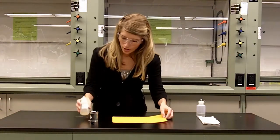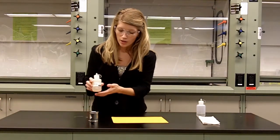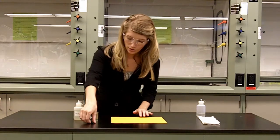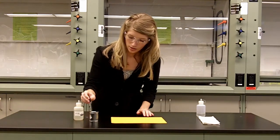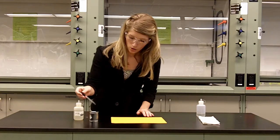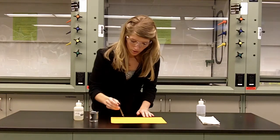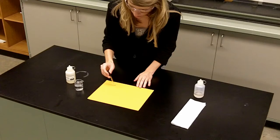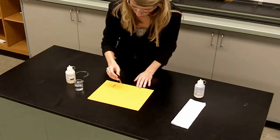So we have some aqueous ammonia. It says 6 molar, but we did dilute it down a little bit, and you can actually just take a small amount of it and write on the paper. So the base turns the paper red.